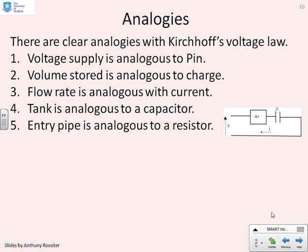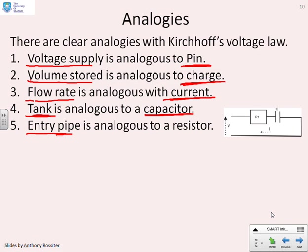So what are the analogies with Kirchhoff's voltage law? The voltage supply is analogous to a pressure supply. The volume stored is analogous to charge stored. The flow rate is analogous to current. The tank, because it stores things, is analogous to the capacitor. And the entry pipe is analogous to the resistor. So what we're doing is we're saying this resistor is analogous to a pipe, and this capacitor is analogous to the tank. And this I is analogous to f in, how much flow is actually coming in. And this voltage is analogous to p in.